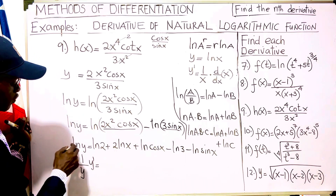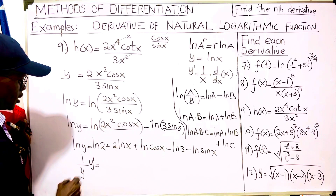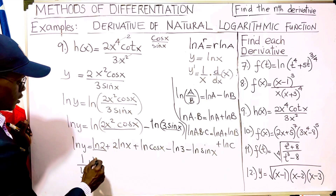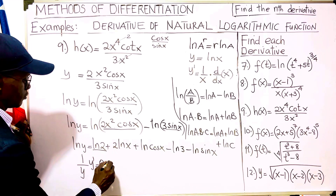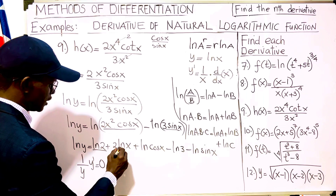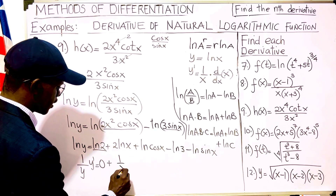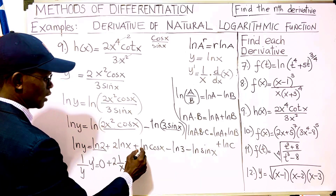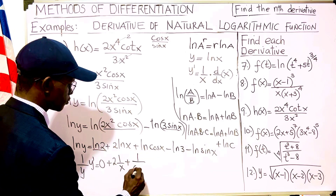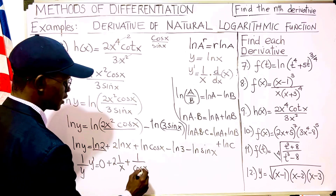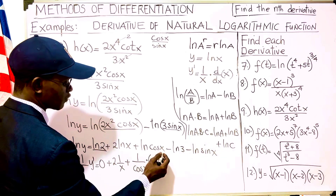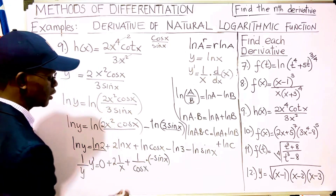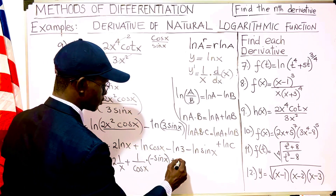The derivative of ln(2) is zero since it's a constant. Then 2·ln(x) differentiates to 2·(1/x). The derivative of ln(cos x) is 1/cos(x) times the derivative of cos(x), which is minus sin(x). And ln(3) is also zero.